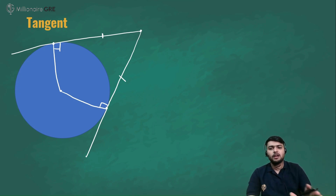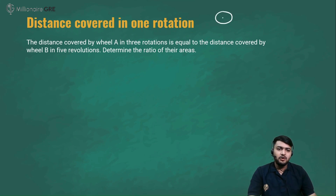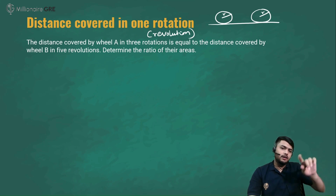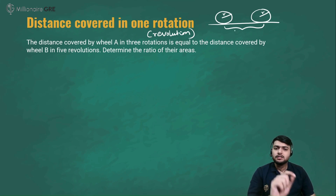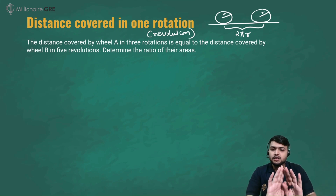Please make note of everything discussed in this video. The next concept is distance covered in one rotation. If a wheel has radius r and makes one rotation, the distance it covers equals its circumference, which is 2πr. So the distance covered by any wheel in one rotation or revolution is equal to its circumference.